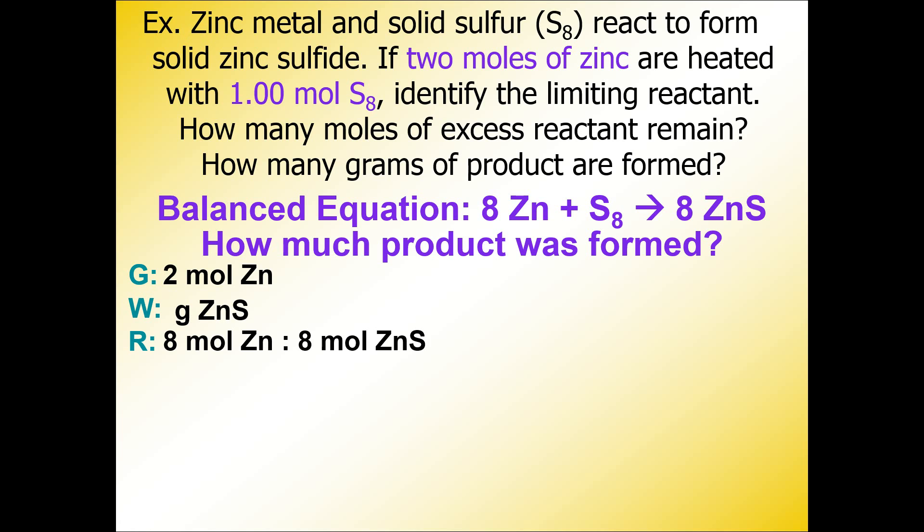For the rest of the relationships, we see the unit of grams next to ZnS, which is a hint that we need to calculate the molar mass of zinc sulfide. Get those periodic tables and calculators out. We're going to add up the mass of zinc to the mass of sulfur. When we do that, we end up with this relationship: one mole of ZnS to 97.446 grams of zinc sulfide.